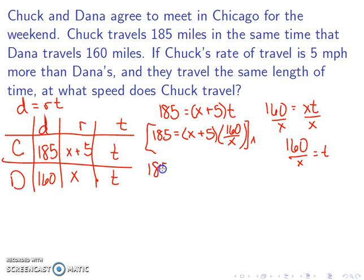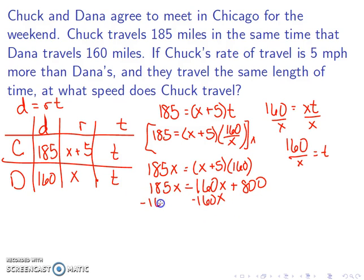I can go ahead and multiply everything by the denominator here. When I do, I get 185x is equal to x plus 5 times 160. So 185x is equal to 160x plus 800. We'll subtract 160x to get the x's together. When we do that, I get 25x is equal to 800. Dividing by 25 gives me 32.